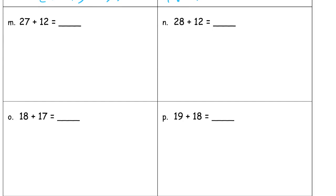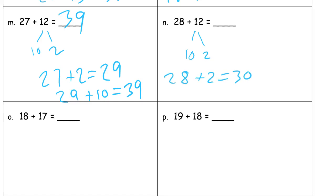And 27 plus 12. Here's one where we split it to 10 and 2. 27 plus 2 is 29, 29 plus 10 is 39. 28 plus 12. Here's one where we're going to want to add the ones first to get 40.